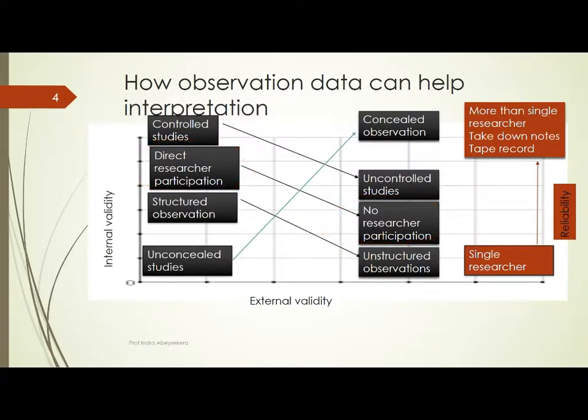If the observation is structured — what is predetermined, this is what we are going to look at — then internal validity is much greater than in unstructured observation. But in unstructured observation, because we are observing everything possible in that setting, external validity becomes greater because we have a more comprehensive set of data for analysis.